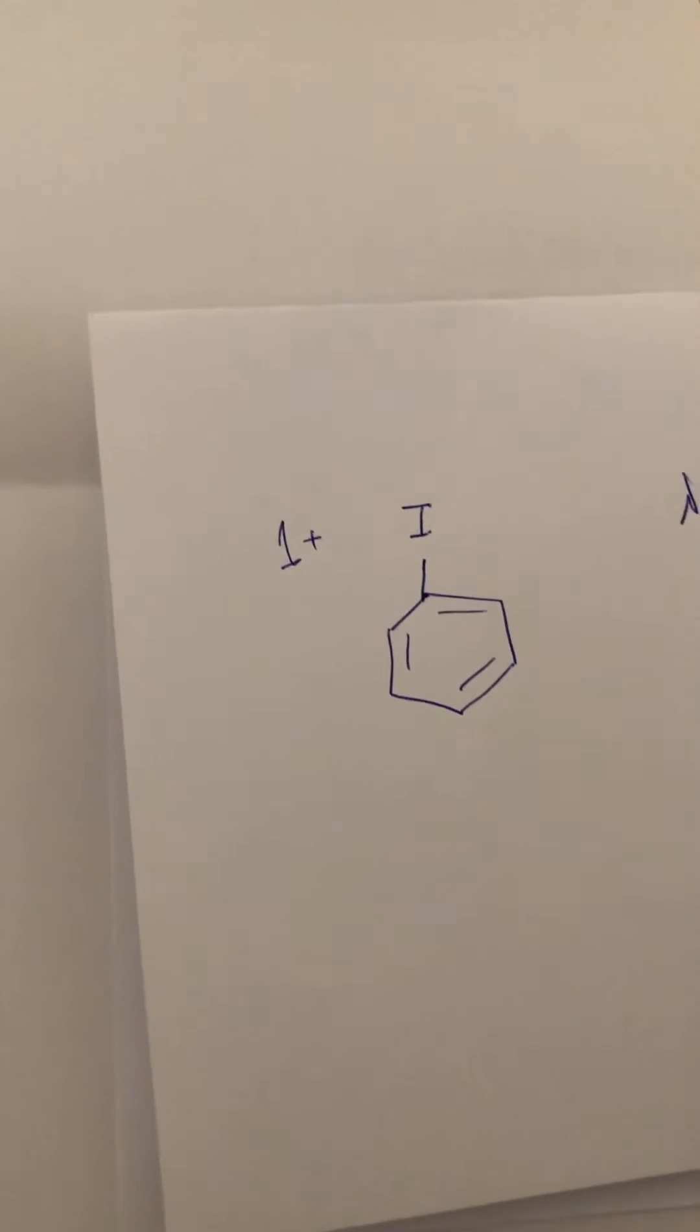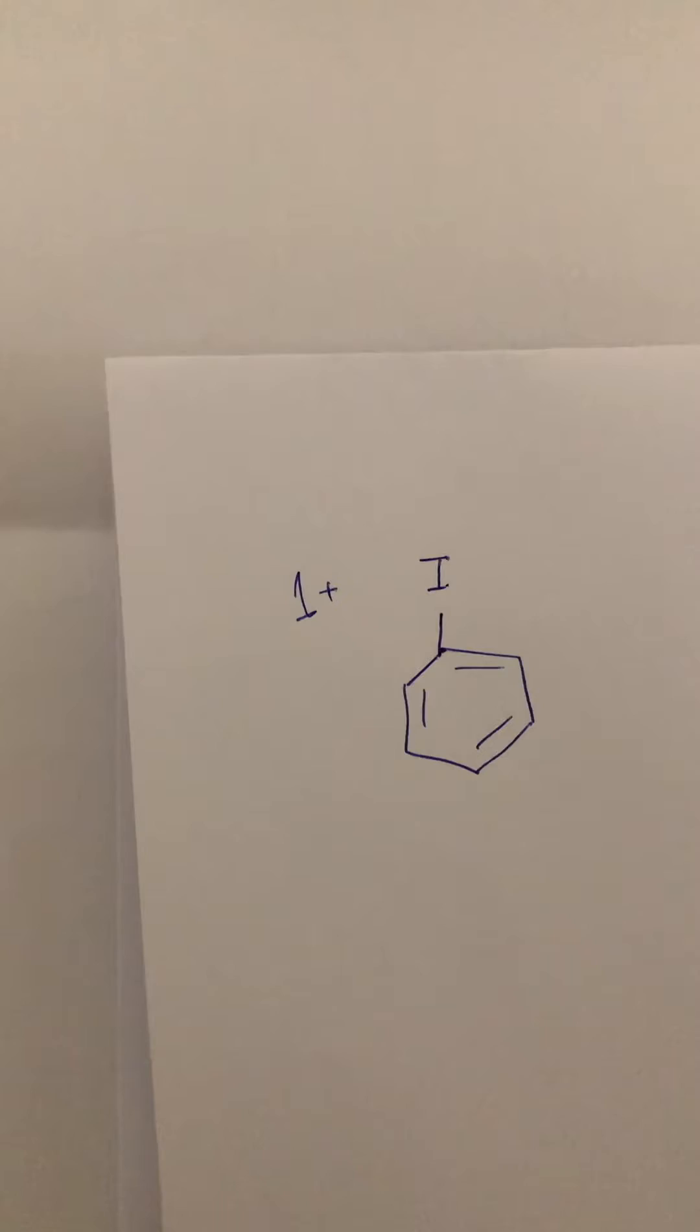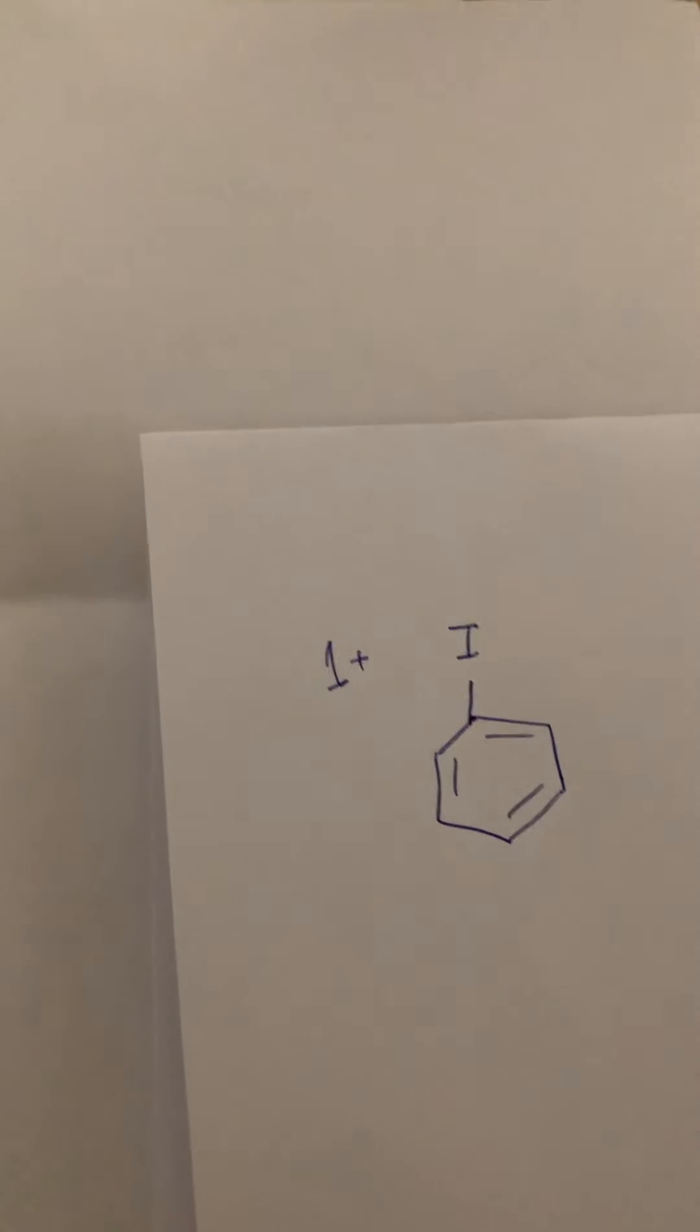Good morning everybody, today I'm gonna talk about a term in organic chemistry which is called hypervalent iodine. First of all, what's the meaning of hypervalency? Hypervalency means that the atom can make more bonds than expected according to the octet rule.